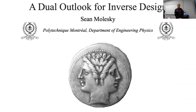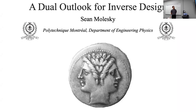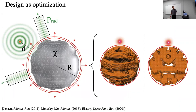Thank you very much for having me today. The title of my talk is 'A Dual Outlook for Inverse Design.' All of my examples today are going to be in nanophotonics, although the theory I'm going to present is much more broadly applicable. The specifics I'll discuss relate to one kind of problem in nanophotonics: the problem of choosing whether or not a point has material. This is highly relevant because usually we don't have that many choices for realistic materials that we can use.